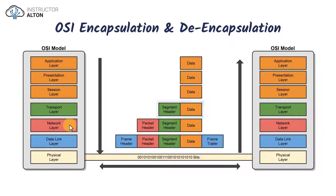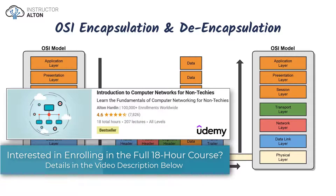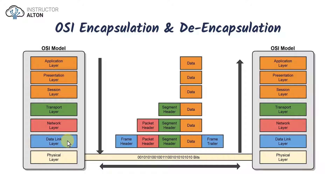As it continues down the OSI model to the network layer, we add on our packet header. A lot of information gets added, but most importantly the source and destination IP addresses. Then it continues to move down to the data link layer, where we add on a frame header and a frame trailer. Again, a lot of information is added, but most importantly the source and destination MAC addresses.